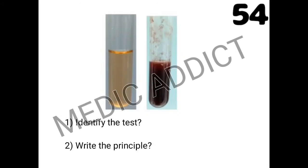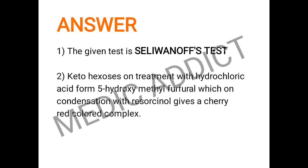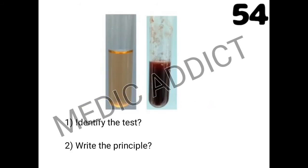The next spot states that there are two test tubes — the first is the control and the second is the test. We have to identify the test and write its principle. The given test is the Seliwanoff test. The principle is that ketohexoses on treatment with hydrochloric acid form 5-hydroxymethylfurfural, which on condensation with resorcinol gives a cherry red color complex. This cherry red color complex can be easily seen in the second test tube, which is the test.